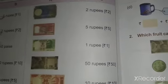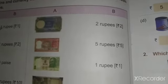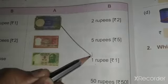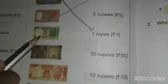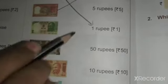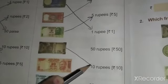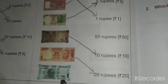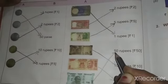Here they have given notes and their names. We should match the correct notes with their names. 1 rupee note - match here. 2 rupee note - match here. 5 rupees note - match here. 10 rupees note - match here. 20 rupees - match here. 50 rupees note - match here. Okay children, thank you.